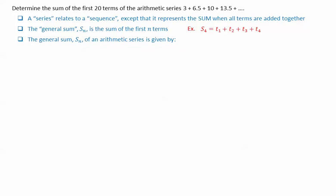The general sum Sn of an arithmetic series is given by the formula: Sn equals a plus Tn, the first term plus the last term, divided by 2, times n, the number of terms.